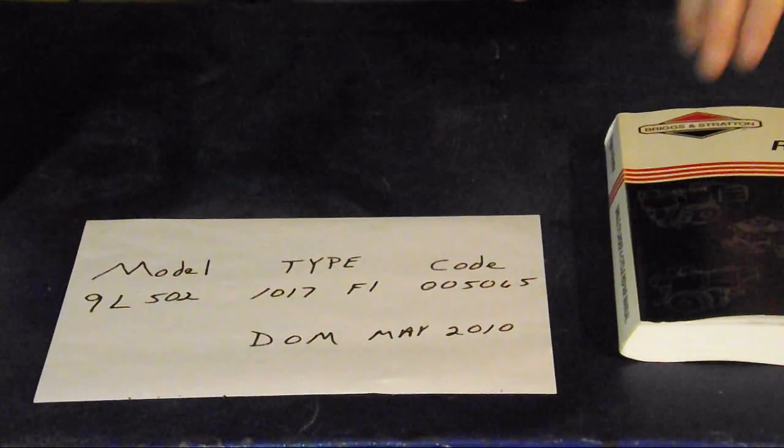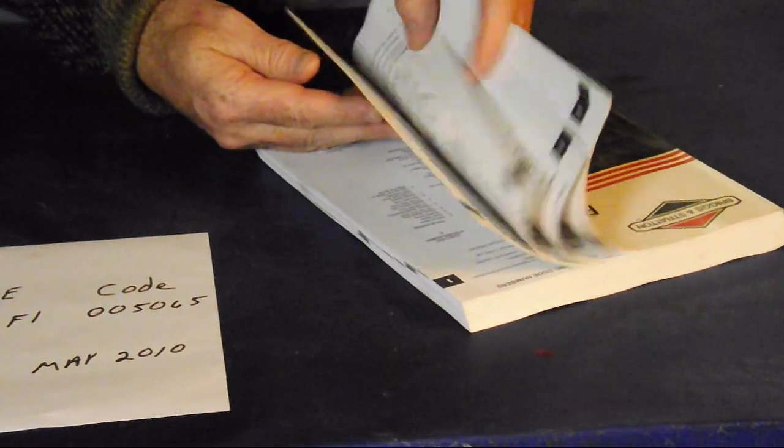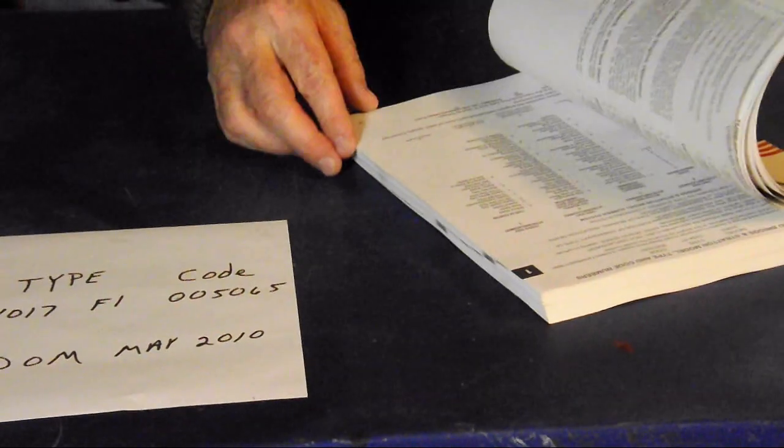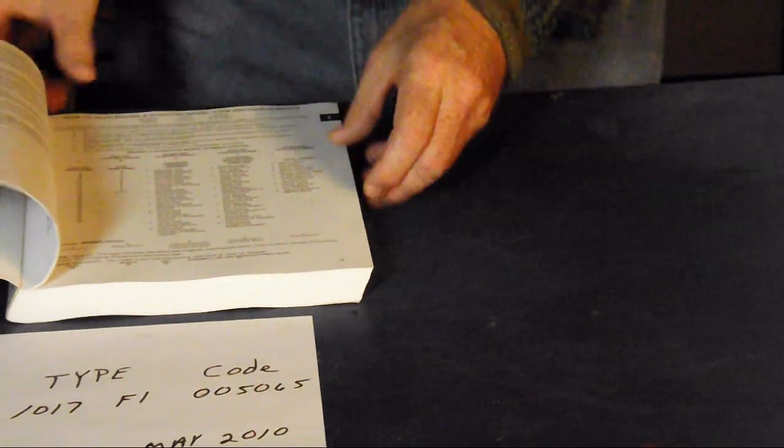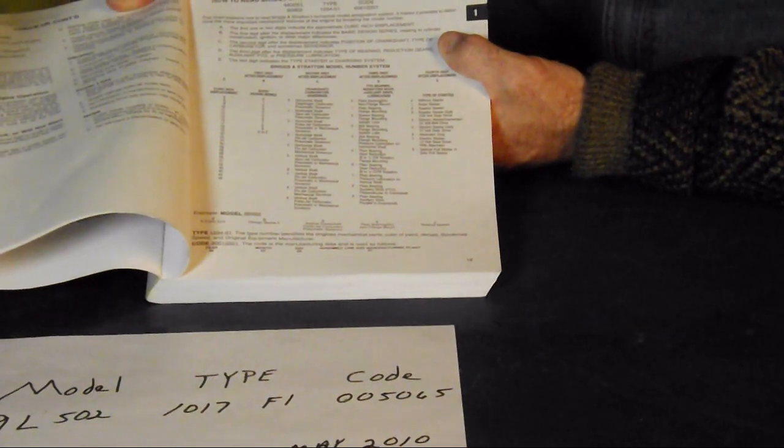our model number is 9L502. Let me tell you what that means. If you'll go to your repair manual and your first section, go to page 15, you're going to get to a page that says how to read Briggs & Stratton model, type, and code numbers.